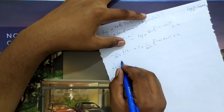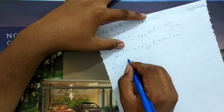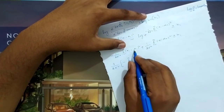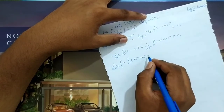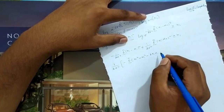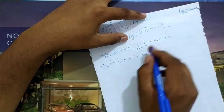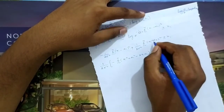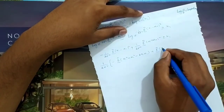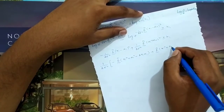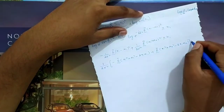So (1/2σ²) times: expanding using the (a−b)² = a² + b² − 2ab formula, we get Σ(xi² + μ1² − 2xi·μ1) minus Σ(xi² + μ0² − 2xi·μ0) ≥ k1.